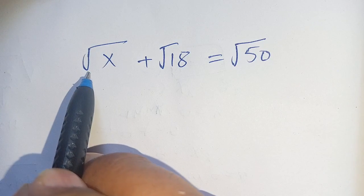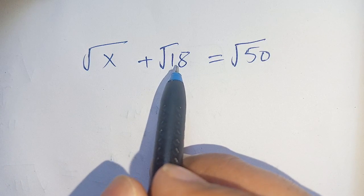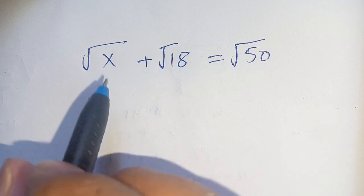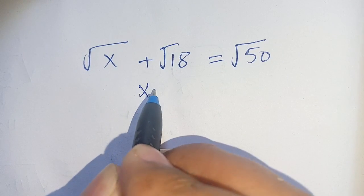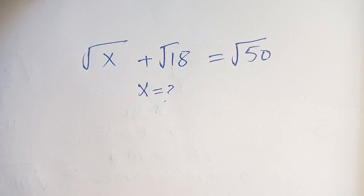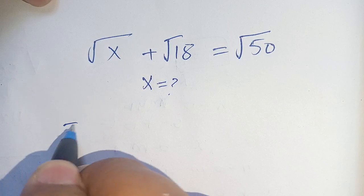Hello everyone. How to solve: square root of x plus square root of 18 is equal to square root of 50, and we have to find the value of x which satisfies this equation. Let us solve this.